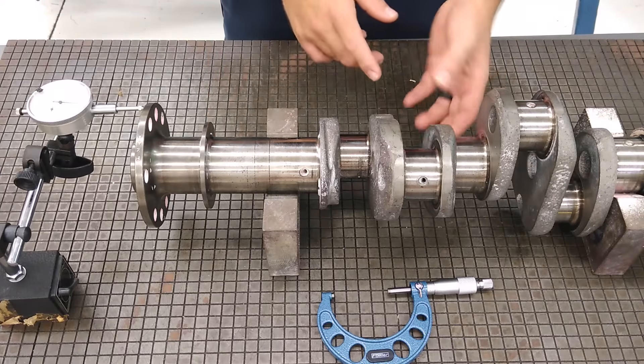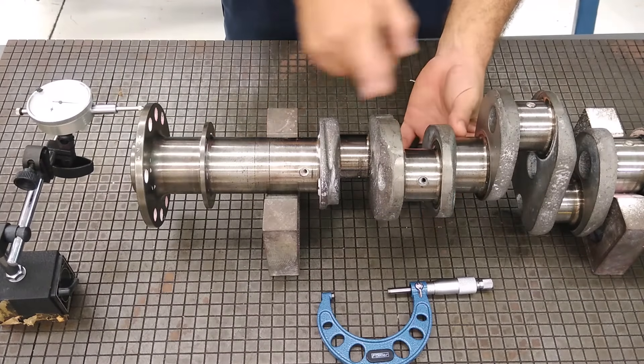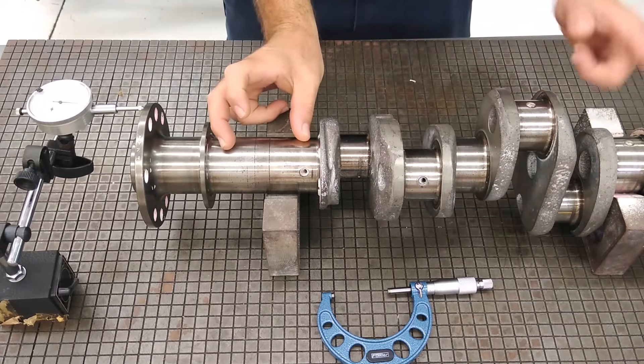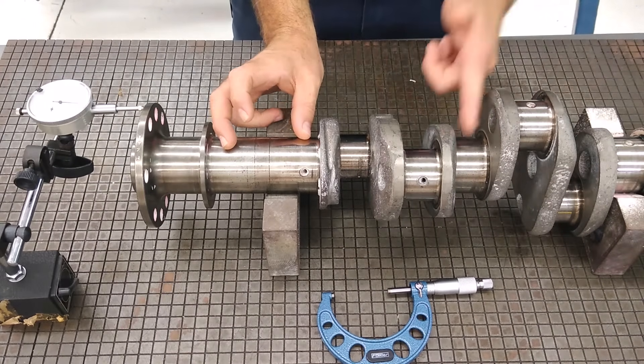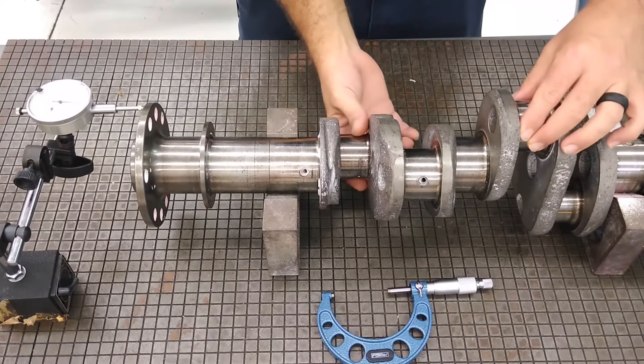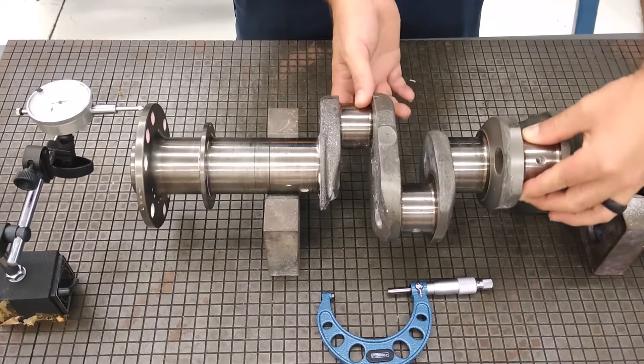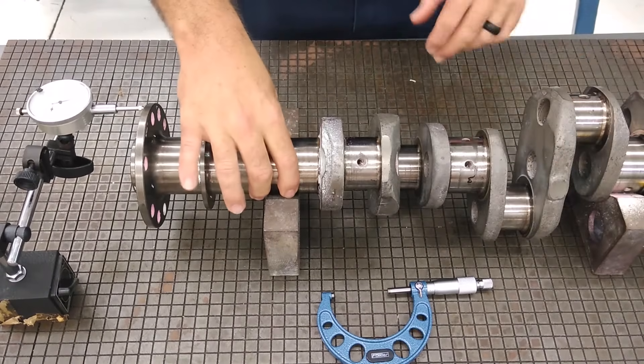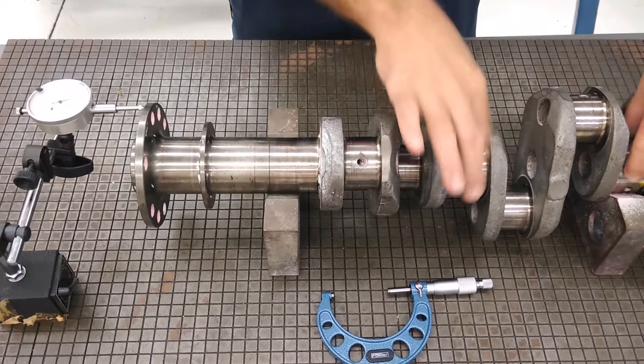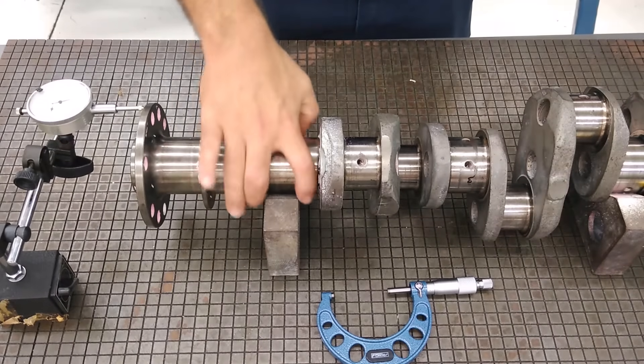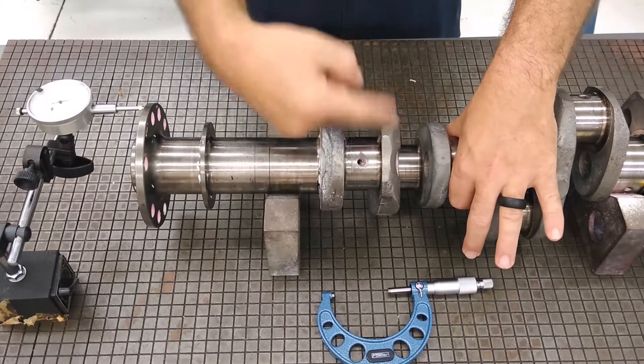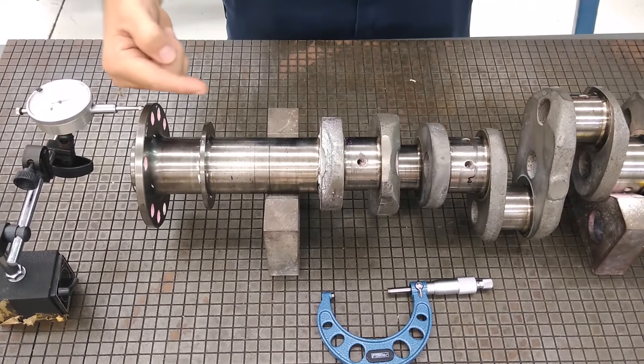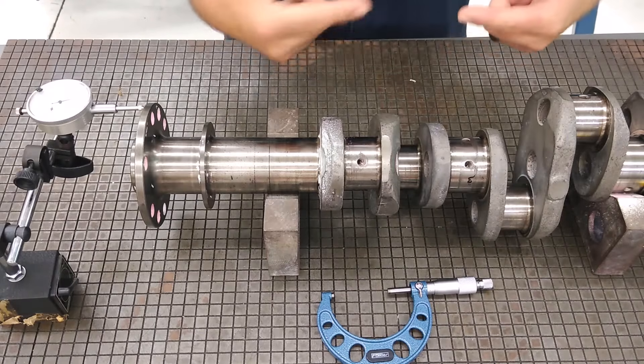We're also going to look at run out on the journal bearings, which all the points of support of the crankshaft are all in a line. So that as the crankshaft rotates, it rotates about the points of support, which are the bearing journals. These are the bearings that support the crankshaft, the rotating assembly. So all of these are supposed to be concentric or in a line and not have any deviation from there.